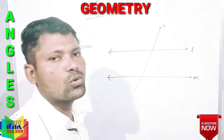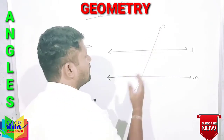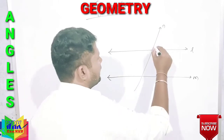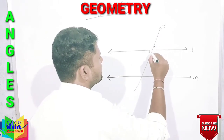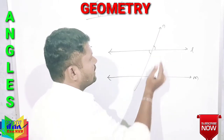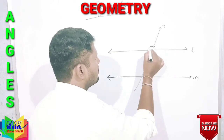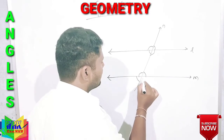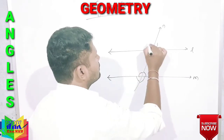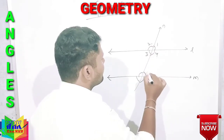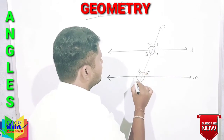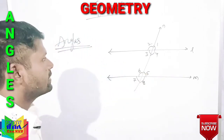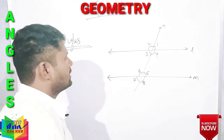L and M are two parallel lines. N is called a transversal — N is intersecting the two parallel lines. It forms 8 angles labeled 1 through 8.